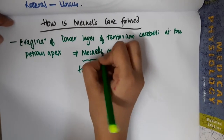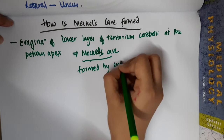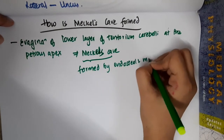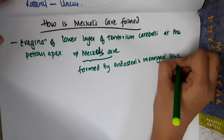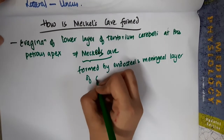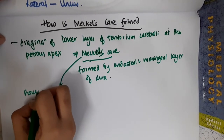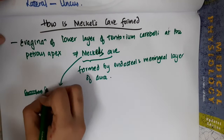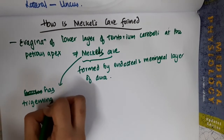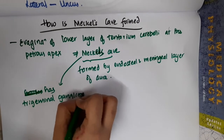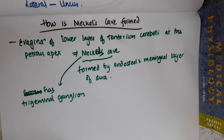Meckel's cave is formed by the endosteal layer and the meningeal layers of the Dura. This Meckel's cave houses the trigeminal ganglion. So this is about Meckel's cave.